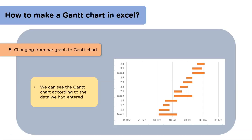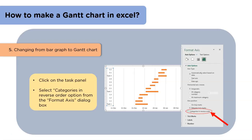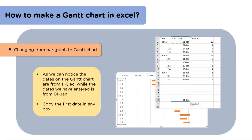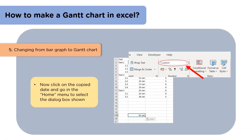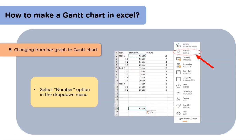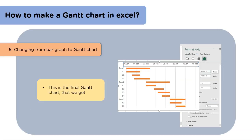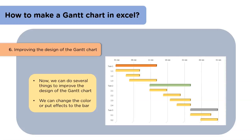We can see the tasks on the left side are in reverse order. So we will click on the task panel, then go to the Format Axis dialog box and select the Categories in Reverse Order option. Now we can find our tasks in the right order. One more thing we can notice is the Gantt chart is starting with some other date and not with the dates we entered. For this, we will copy the first date into another cell, then go to the home menu to select the dialog box, and in the drop-down menu select the Number option. We can find a value displayed in the copied cell. We will copy that value, click on the dates on the chart, and as the Format Axis dialog box opens, paste that value in the Minimum box. As a result, we will have our final Gantt chart on the screen. In the last step, we can give several designs to the Gantt chart, change colors, and make it more presentable.